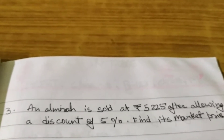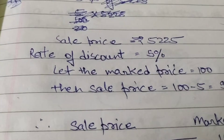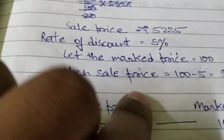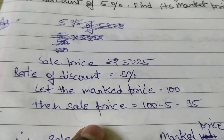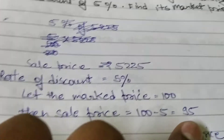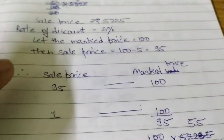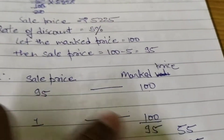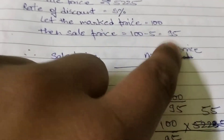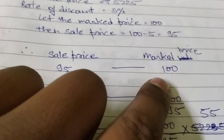Third question: a camera is sold at rupees 5,225 after allowing a discount of 5%. Find its marked price. The sale price is rupees 5,225 and the rate of discount is 5%. If the marked price is 100, then after 5% discount the sale price will be 95.